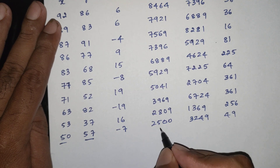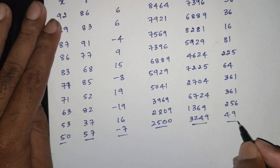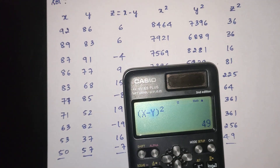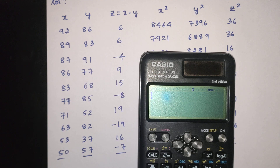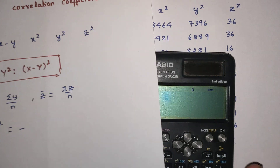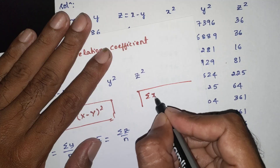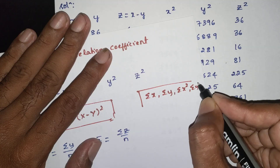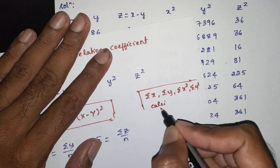Now we find the summations: summation of X, summation of Y, summation of X square, summation of Y square. All summations are to be taken. You can find these using the STAT function on a calculator.